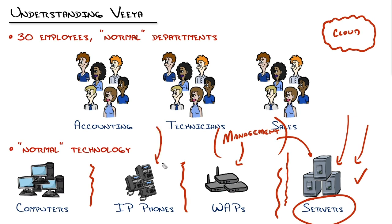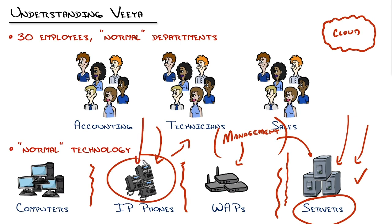IP phones are a sensitive bunch, and I would want those in their own secure VLAN. If you open them to the rest of the employees and the network, they can not only have their web interface accessed pretty easily, but there are also ways to capture the actual audio streamed into those phones, reassemble it as a WAV file, and convert it to an MP3. That's not good. So IP phones definitely represent a different security parameter.